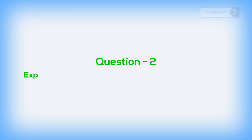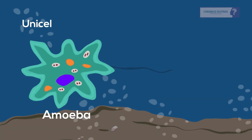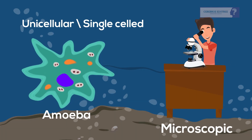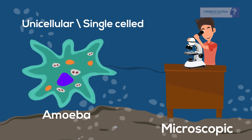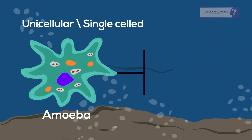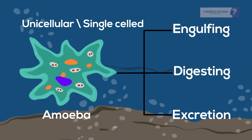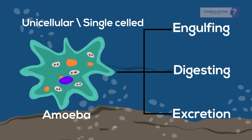Question 2: Explain the feeding and digestion in amoeba. Amoeba is unicellular, meaning it is a single-celled microscopic pond organism. Though it is a unicellular organism, it functions all the essential functions of life.